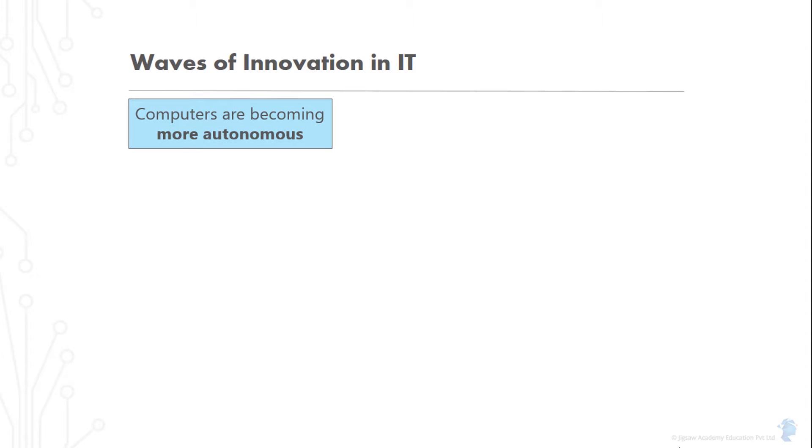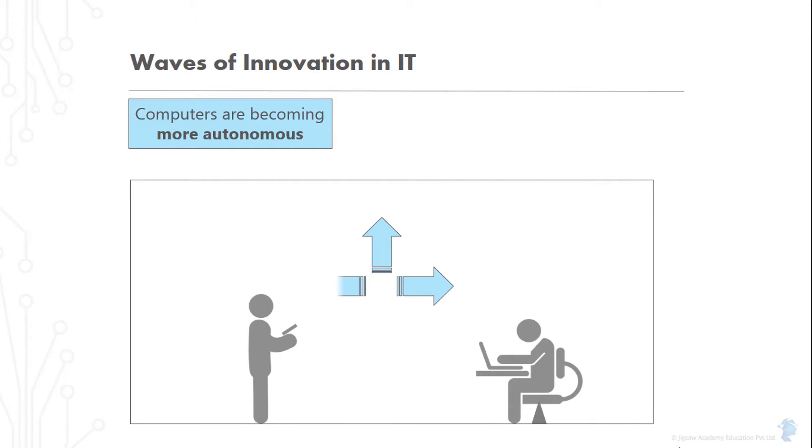From occupying an entire room, to sitting on a desk, to sitting in our pockets, computers are now things that we can leave behind in various nooks and crannies of our physical environment. We would have a little computer sitting in our electricity mains, playing the role of a smart meter.